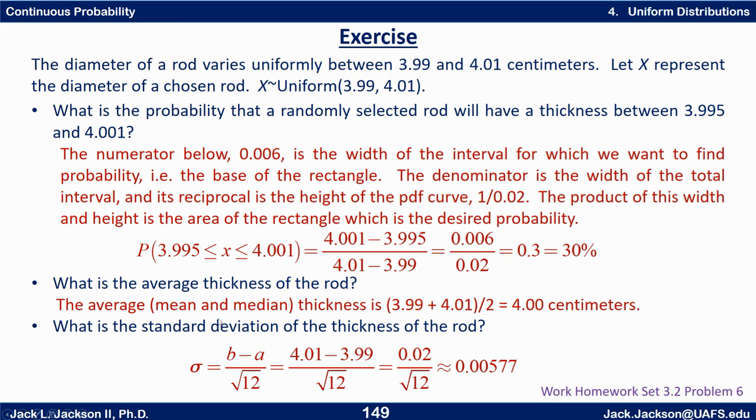The average both the mean and the median thickness is just average the ends. 3.99 plus 4.01 divided by 2. That's 4. So exactly 4 is halfway between 3.99 and 4.01.